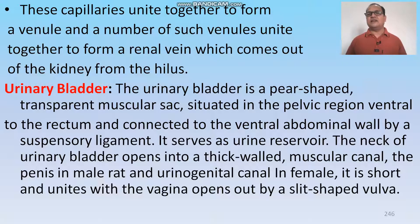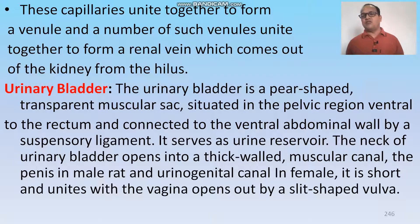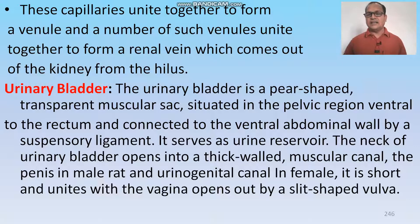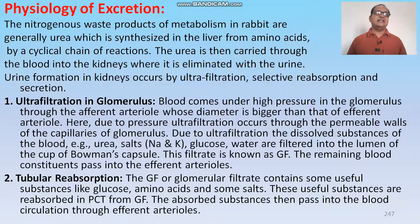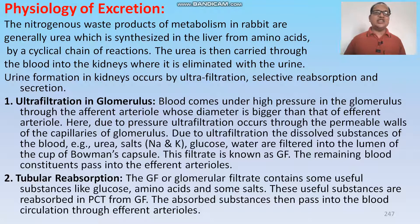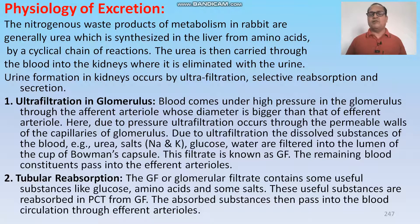The urinary bladder is a pear-shaped transparent muscular sac situated in the pelvic region, ventral and connected to the ventral abdominal wall by the suspensory ligament. It serves as the urine reservoir. The neck of the urine reservoir opens into a thick-walled muscular canal and penis in male rat and the urinogenital canal in the female rat, which unites to form a vagina opening out by the slit-shaped vulva. The nitrogenous waste product of metabolism in rat is generally urea, which is synthesized in the liver from amino acids by a cyclic chain of reactions, then carried through the blood into the kidney and eliminated as urine.